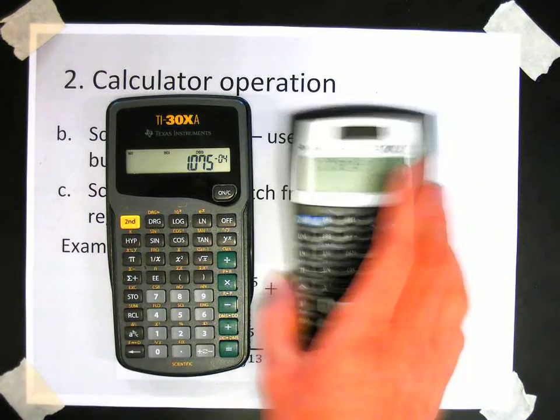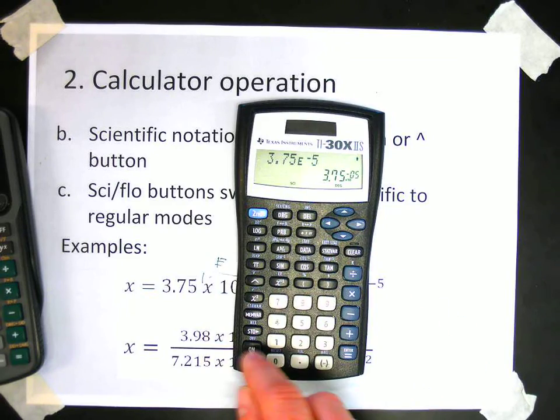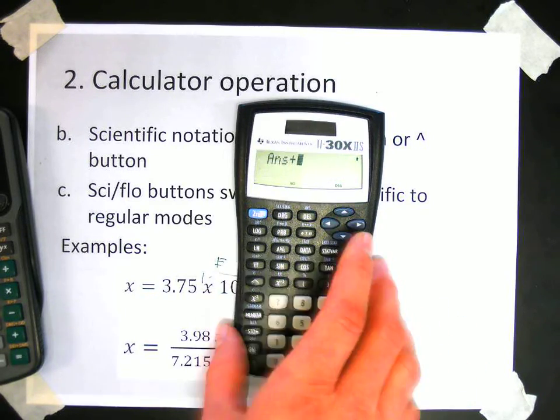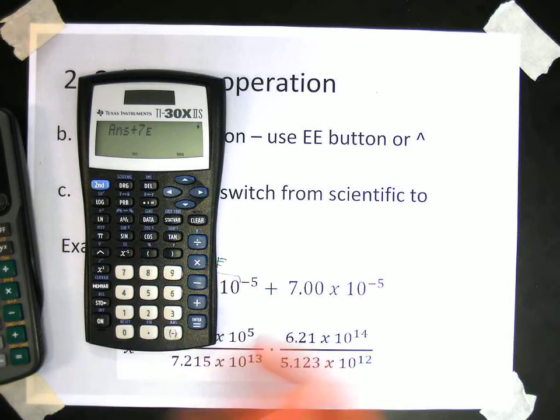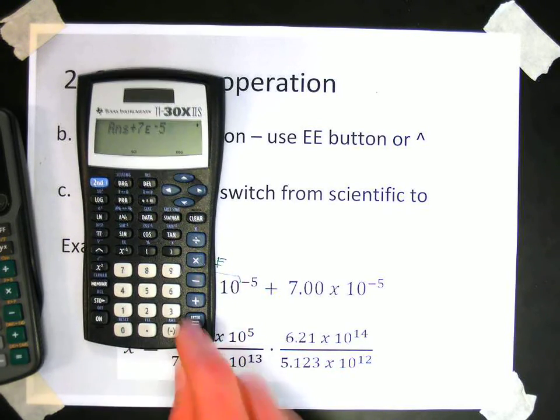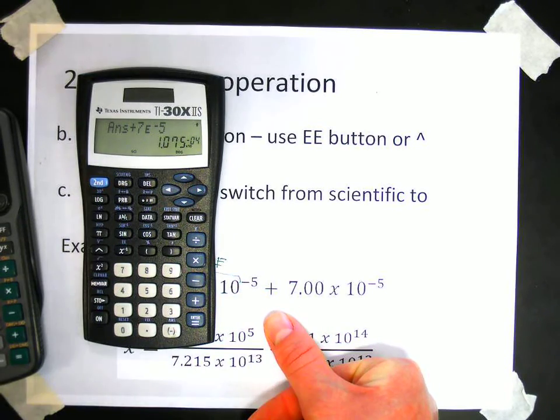Or on this calculator, it would be plus 7, 2nd E, negative 5 equals. And there we have it again, 1.075 times 10 to the negative 4th.